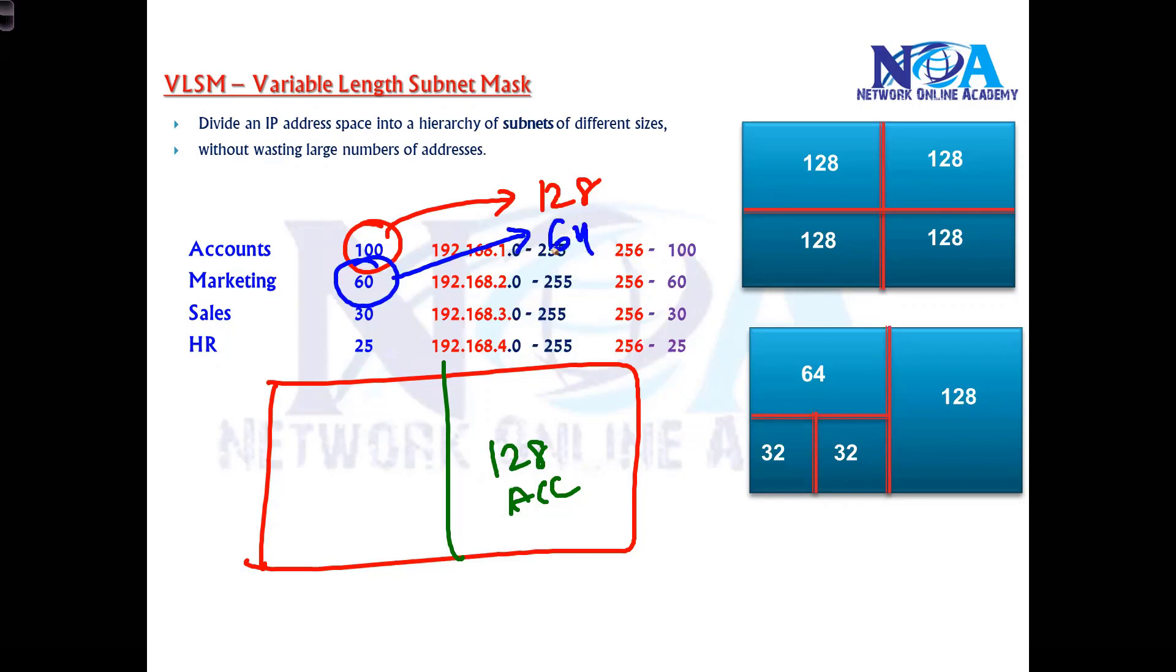From the 2 power table: 2^6 is 64, 2^7 is 128. I'll go with 64 for Marketing. In the remaining 128, I'll divide it into two parts - 64 and 64. So 128 is given to Accounts, 64 to Marketing, and 64 addresses remain available.